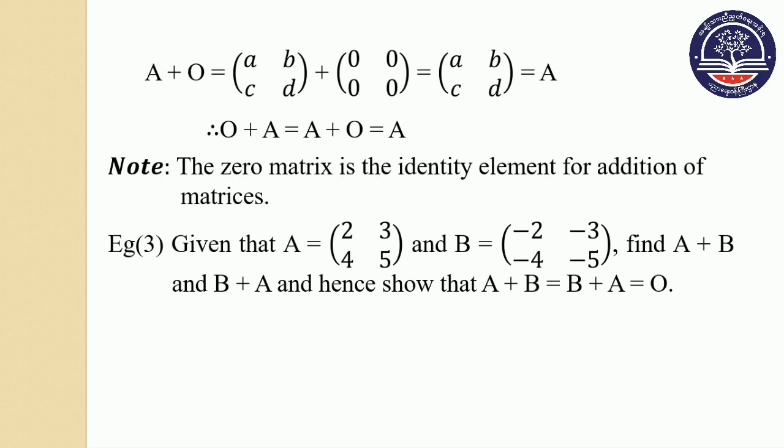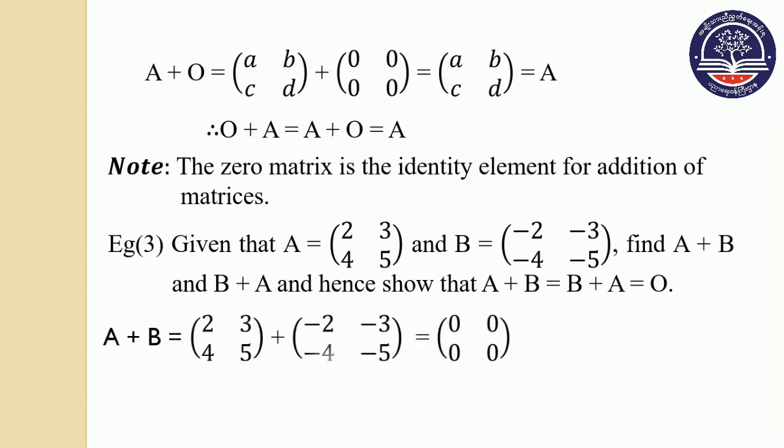We can see A plus B: 1, 2, 3, 4, 5 plus minus 2, minus 3, minus 4, minus 5 gives 0, 0, 0, 0. So A plus B equals the zero matrix.